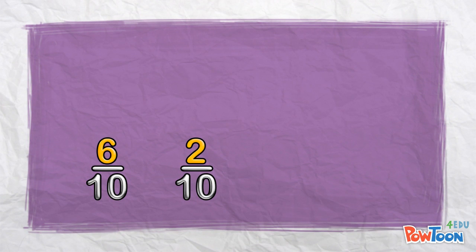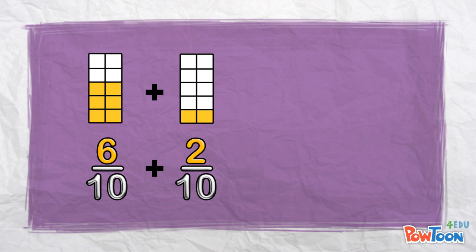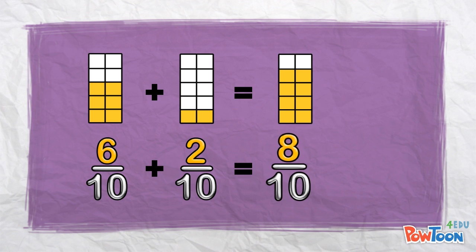In this example, we've got 6 parts out of 10 plus 2 parts out of 10. 6 plus 2 is 8 parts out of 10.